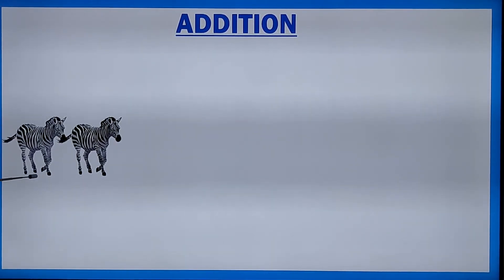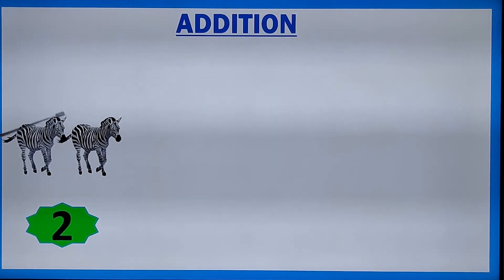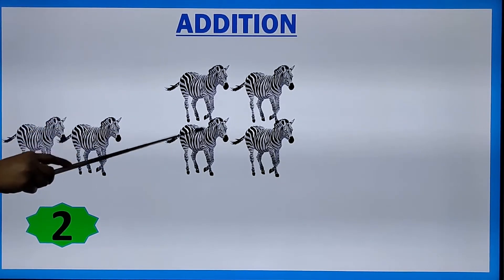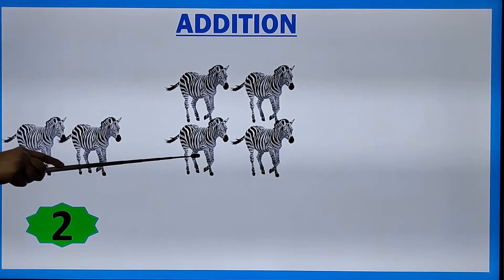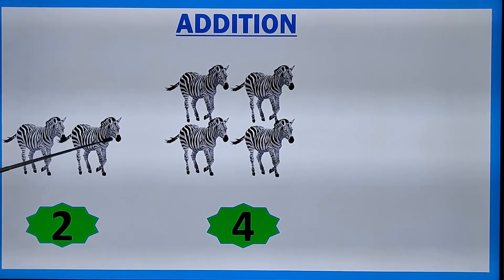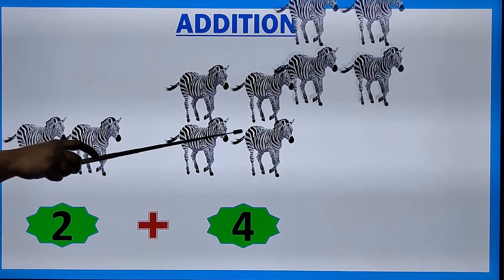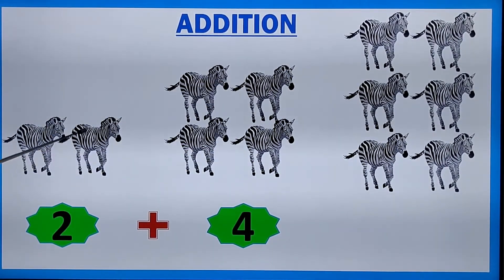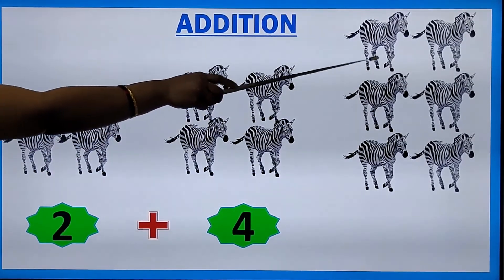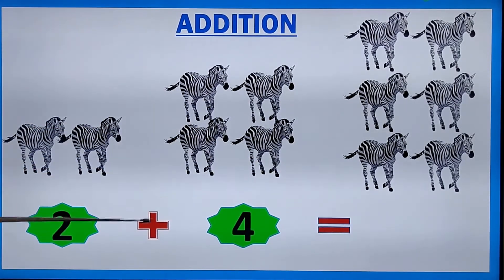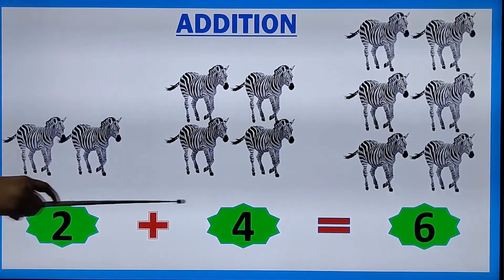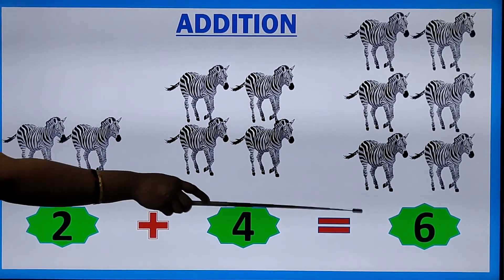How many zebras are there here? Two zebras — one, two. Now we are adding four more zebras with that — one, two, three, four. Two plus four. Two zebras plus four zebras together — one, two, three, four, five, six. Six zebras. Two plus four is equal to six.